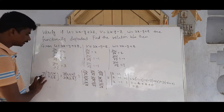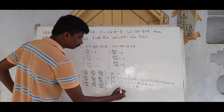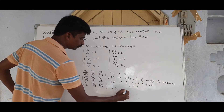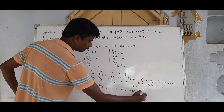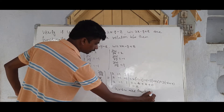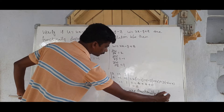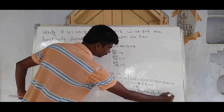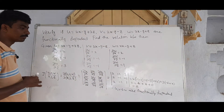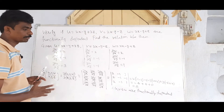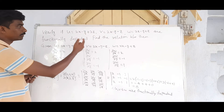J = 0, so u, v, and w are functionally dependent. Since the Jacobian equals zero, we confirm functional dependence and now need to find the relation between them.